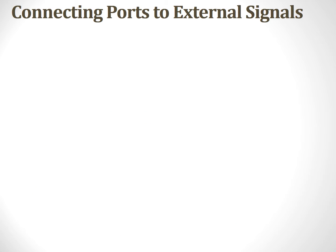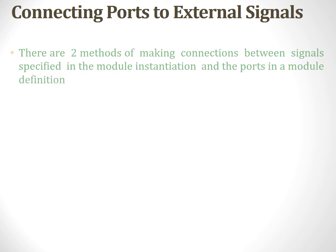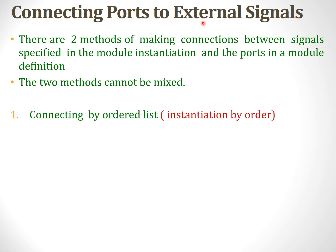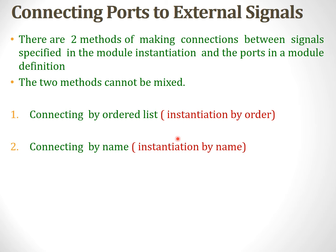Connecting ports to external signals. Normally when we do instantiations, that is when we call a module within another module, there are two methods of making connections between the port signals in the module instantiations. The first method is connection by ordered list or instantiation by order, and the second one is connection by name or instantiation by name. These two methods cannot be mixed.